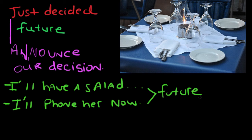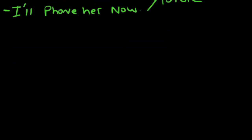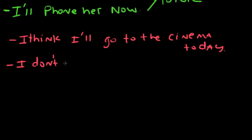Sometimes we use 'I will' with the verbs 'think' and 'don't think.' For example: 'I think I'll go to the cinema today.' Or: 'I don't think you'll have time to go to the cinema today.'